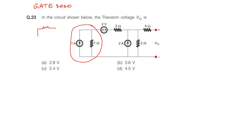Always remember that the arrow direction is plus and the tail of the arrow is treated as minus. The front side of the arrow is positive and the back side — the tail of the arrow — is negative. Remember it because current flows from higher potential to lower potential, so the arrow direction can be thought of as plus.